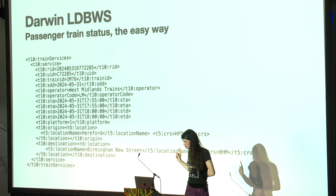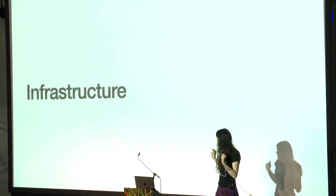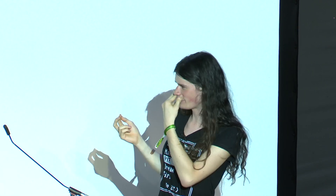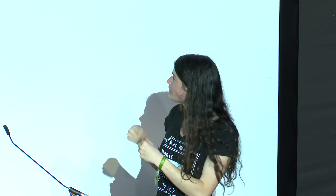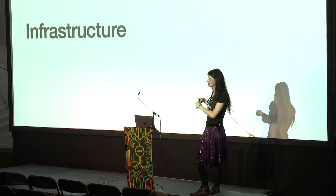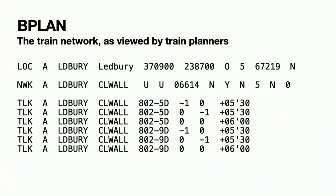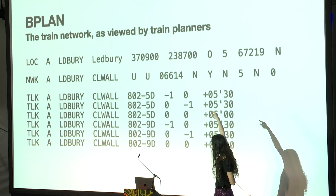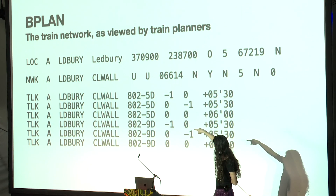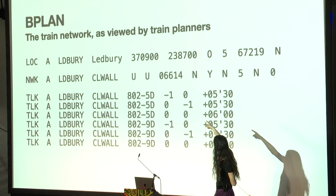So there's timetables and there's train status — those are the two big things. Let's move on to some more esoteric things, like infrastructure. There's less stuff done here. This is data about not necessarily what trains are running, but what train network exists — what trains could you theoretically run. There's a very cool dataset called B-Plan — that's the train network data they use for planning timetables. It gives you a list of all locations on the network and which locations are connected to each other. For example, Ledbury is connected to the next station called Colwall, and they are six kilometers apart.